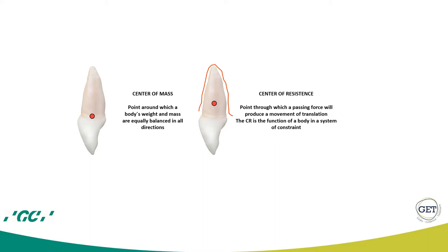The difference between center of mass and center of resistance is that the center of mass is abstract, existing in free space without gravity. All bodies are subjected to some boundaries. In the case of teeth, we have gravity, the alveolar bone, and the periodontal ligament. So the center of resistance will be something very different from the center of mass.